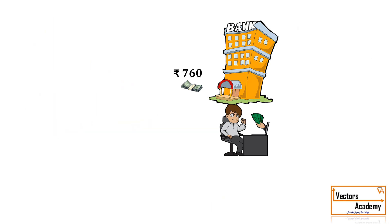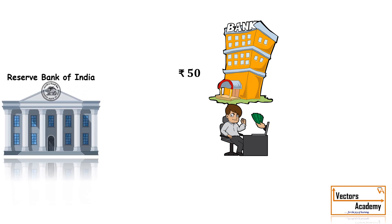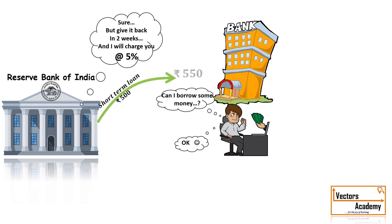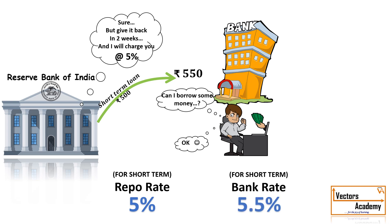Consider a situation where the bank does not have enough money to meet its daily expenses or to give away loans. It calls up the RBI and asks for some money. The RBI agrees to give the money but at a certain rate of interest. That rate of interest is called the repo rate. The loan can be for the short-term or for the long-term. The rate charged for short-term loans is called the repo rate, whereas the rate charged for long-term loans is termed the bank rate.